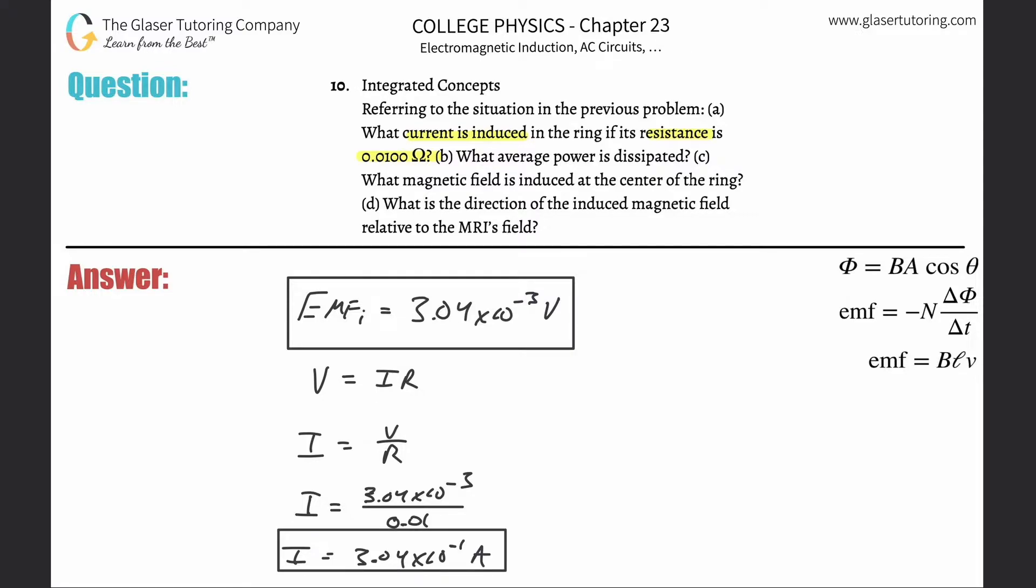And then it says what average power is dissipated. So here we're going to talk about power. P is equal to IV, right? You can use that formula. You can use a whole bunch of formulas.